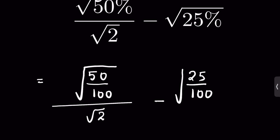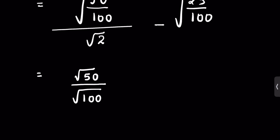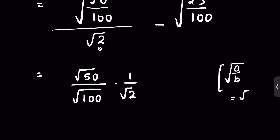We can write this as square root of 50 upon square root of 100, times 1 upon square root of 2. This is because if a upon b is under square root, we can write it as square root of a upon square root of b, minus square root of 25 upon square root of 100.